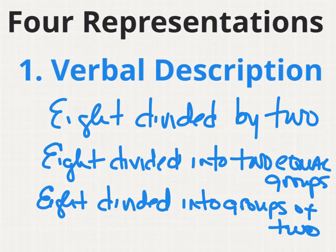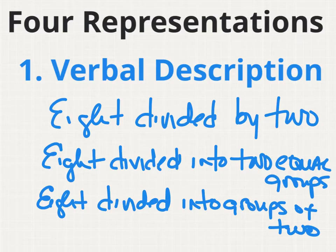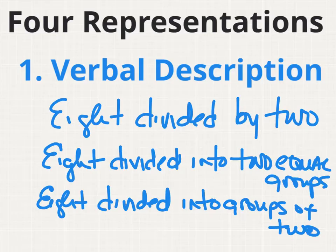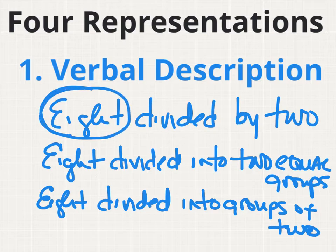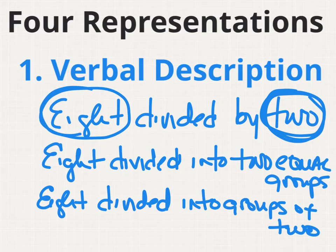All of these descriptions properly describe 8 divided by 2. If I have 8 divided by 2, my quotient or solution will be 4. If I had 8 divided into 2 equal groups, each of these equal groups would have 4 in them to make 8. Or finally, if I divided 8 into groups of 2, I would have 4 — 4 groups of 2 would make 8. In each of these 3 verbal descriptions, I have a dividend of 8 and a divisor of 2, making my quotient 4.